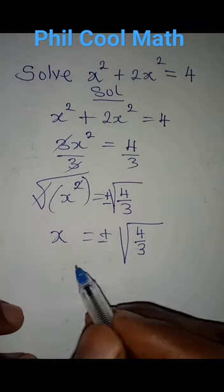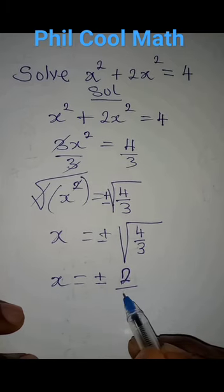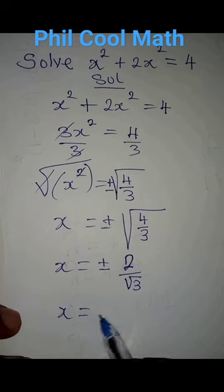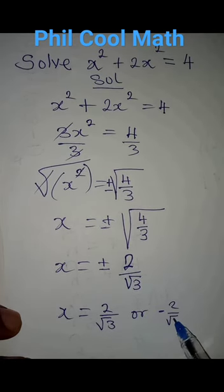Now we can have the square root of 4. So we have x to be equal to positive or negative 2, because square root of 4 is 2. Then we have over square root of 3. I've split it this way, so that this means x is equal to 2 over root 3 or minus 2 over root 3.